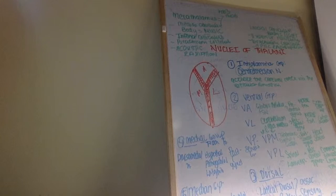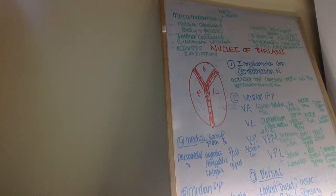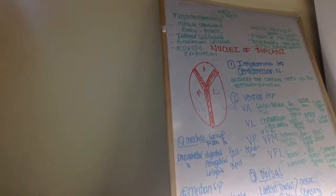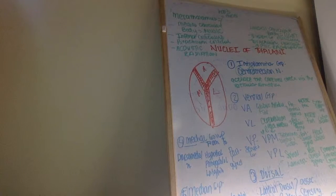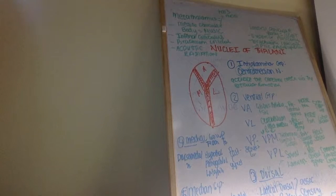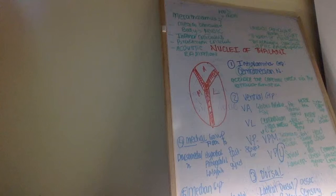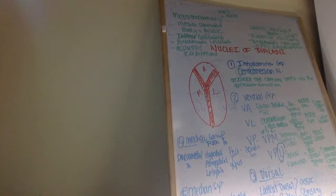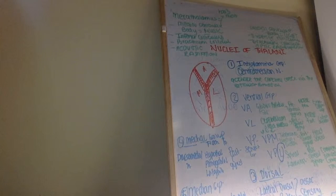For VPL, you've seen this in the medial lemniscus video: fasciculus gracilis and fasciculus cuneatus → nucleus gracilis and nucleus cuneatus → internal arcuate fibers decussating → ascending as the medial lemniscus → VPL. Here I'm calling it the spinal lemniscus because it also includes the spinothalamic tract. VPL carries general sensation from the limbs and trunk — L for limbs — and projects to the postcentral gyrus, the somatosensory cortex.